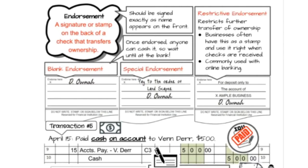The third type of endorsement is called a restrictive endorsement, which restricts further transfer of ownership. Businesses often use this as a stamp right when checks are received so that no one else can deposit or transfer ownership further. It's commonly used with online banking. The endorsement needs to say 'for deposit only to the account of' the business name, and then the authorized person signs it. The 'for deposit only' restricts it to the account listed.